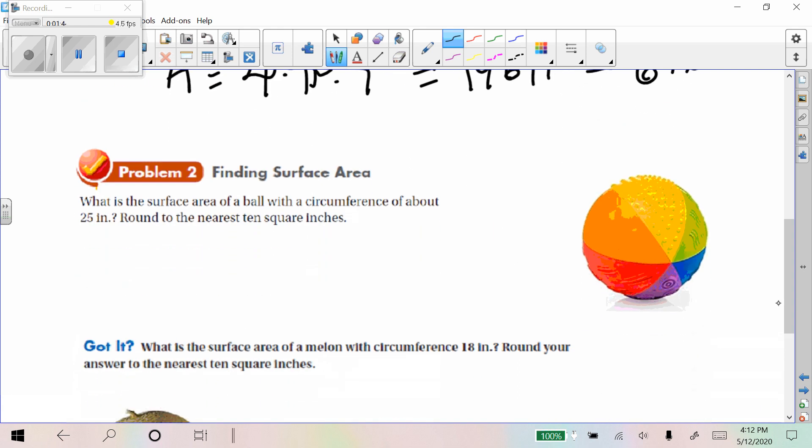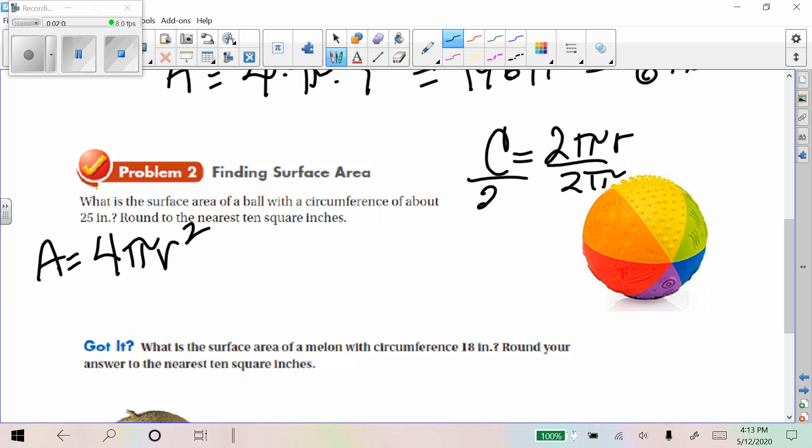So, what does the surface area involve with the circumference of about 25 inches? To use this formula, we need to know the radius. Well, in the circumference, that's equal to 2 pi r. So that means if I divide both these by 2 pi, that the radius is equal to the circumference divided by 2 pi.